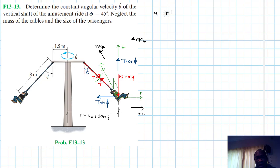Our A Ara is just equal to Ara double dot minus Ara theta dot square. Ara is equal to 1.5 plus 8 sin phi, and phi is 45 degrees. And this is constant.